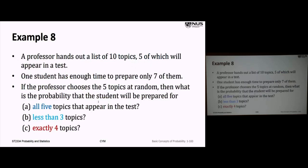Example 8: a professor hands out a list of ten topics; five will be on the test. A student has enough time to prepare for seven topics. The professor chooses five topics at random — 'at random' means equally likely. What's the probability the student will be prepared for all topics on the test? The sample space size is 10 choose 5 possible combinations.